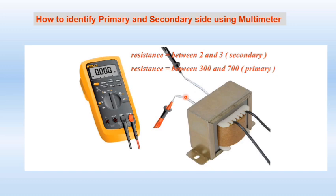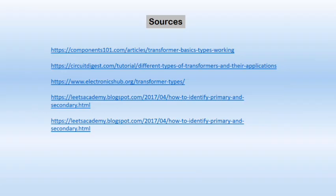The reason for this is that in a step-down transformer, the primary side has a greater number of turns, so the resistance is higher. At the secondary side, there are fewer turns, so the resistance is lower. In this way, we can identify the primary and secondary winding using a digital multimeter.